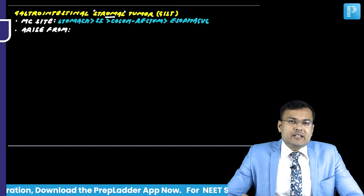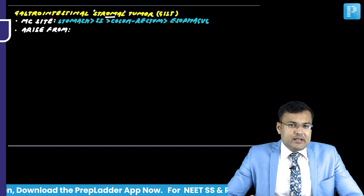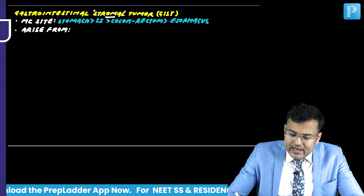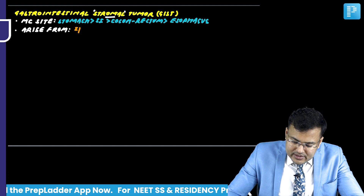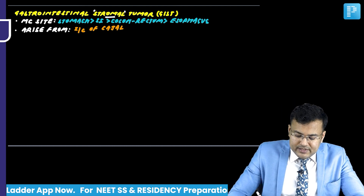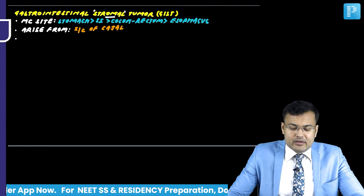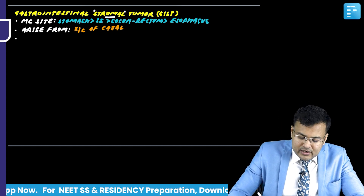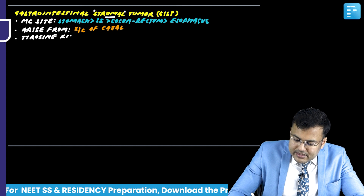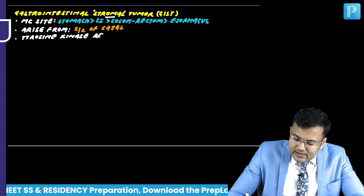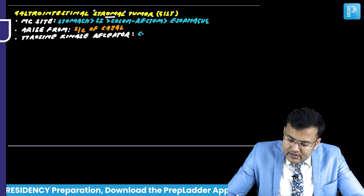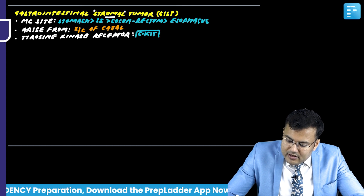GIST arises from gastric pacemaker cells, known as the interstitial cells of Cajal. In GIST patients, there is expression of a tyrosine kinase receptor called c-kit.